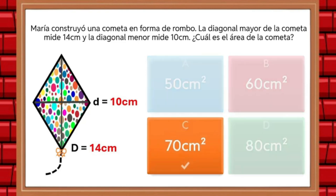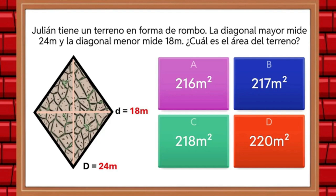Let's look at the following image. Julian has a plot of land in the shape of a rhombus. The major diagonal measures 24 meters and the minor diagonal measures 18 meters. What is the area of the plot? The answer is 216 square meters.